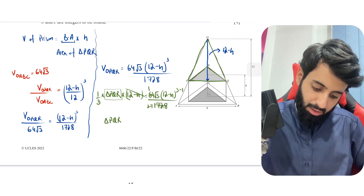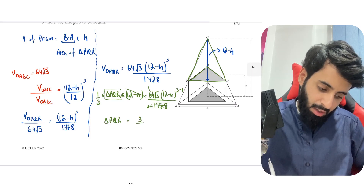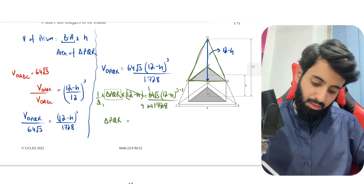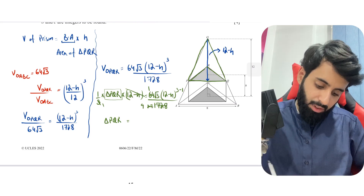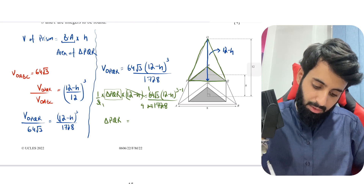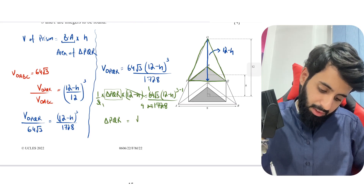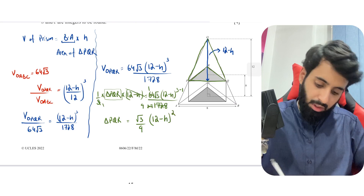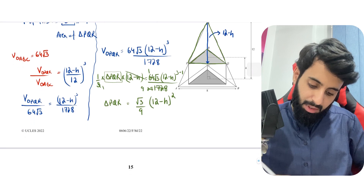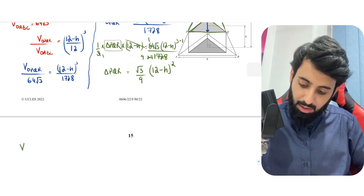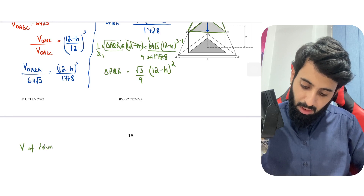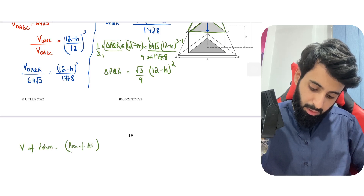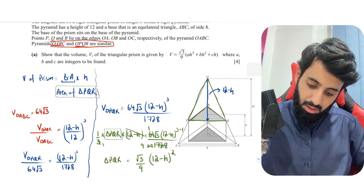So the area of triangle PQR = (3/27) × √3 × (12 − h)² = (√3 / 9) × (12 − h)². Now that we have the area of triangle PQR, we can find the volume of the prism: V = area of triangle PQR × height = (√3 / 9)(12 − h)² × h.